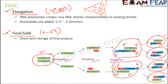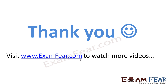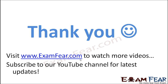This is how the entire process of polymerase chain reaction takes place. If you have any doubts about DNA replication, you can refer to the lesson on molecular basis of inheritance. With this, we understand how amplification of the desired gene, or gene of interest, is done — amplification meaning multiple copies of the same gene are created. Please visit examfear.com to watch more educational videos, and do not forget to like and subscribe to our YouTube channel for latest updates. Thank you.